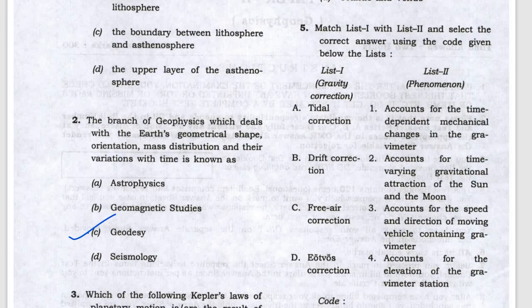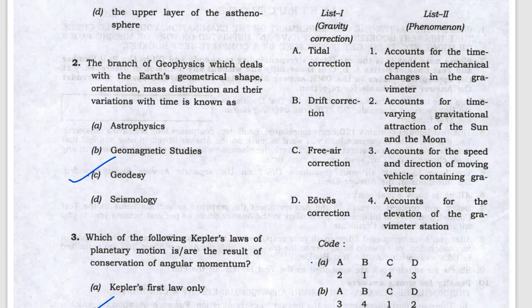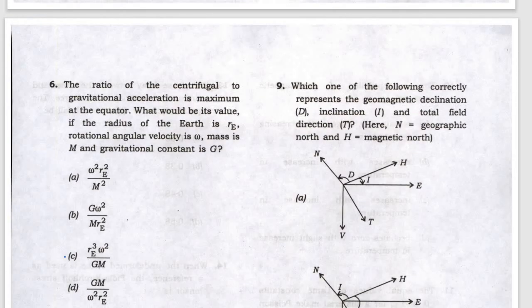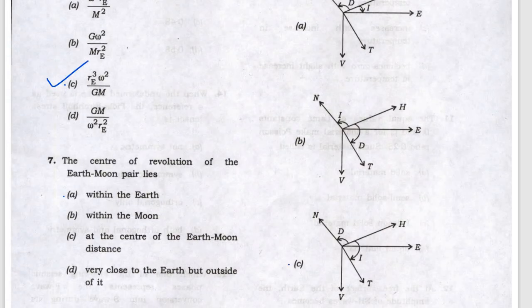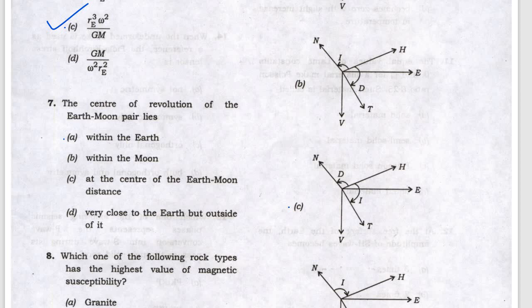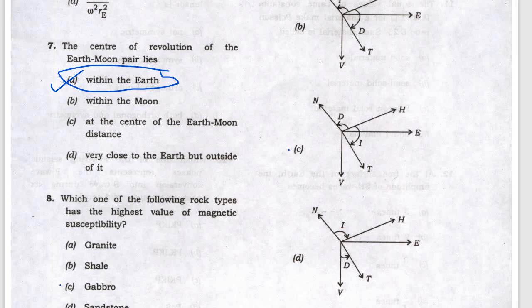Next is a matching question — the suitable answer is A, you can match. Next is the ratio of centrifugal acceleration to gravitational acceleration — the answer is C. And the center of revolution of the Earth-Moon pair lies within the Earth — the center of mass lies within the Earth.